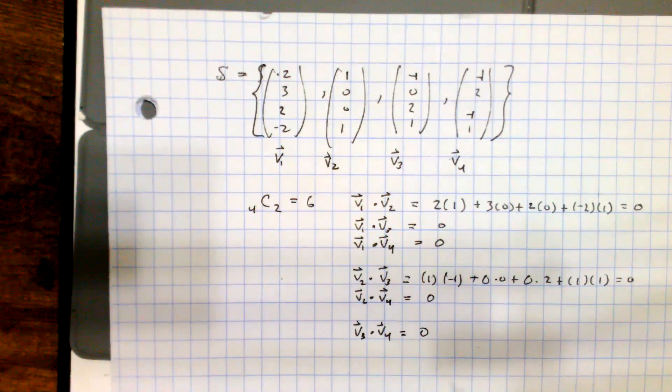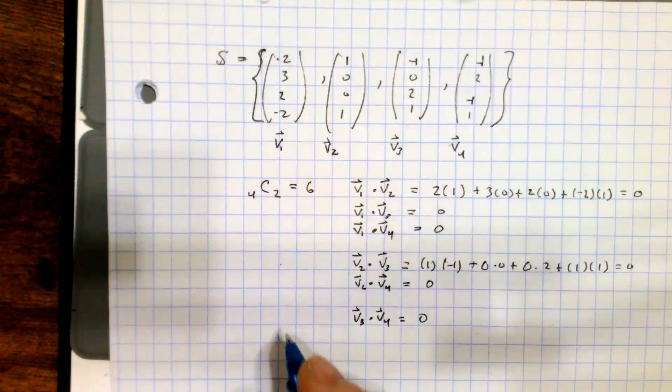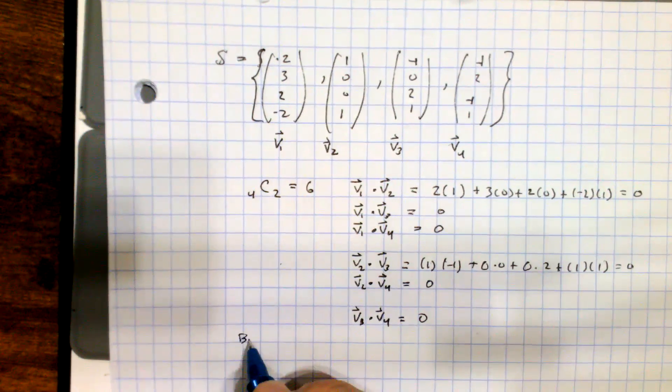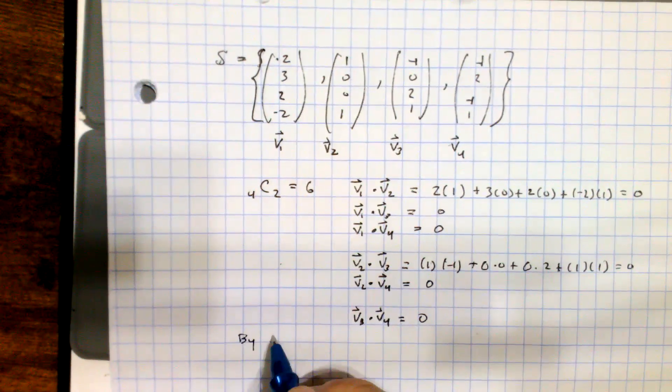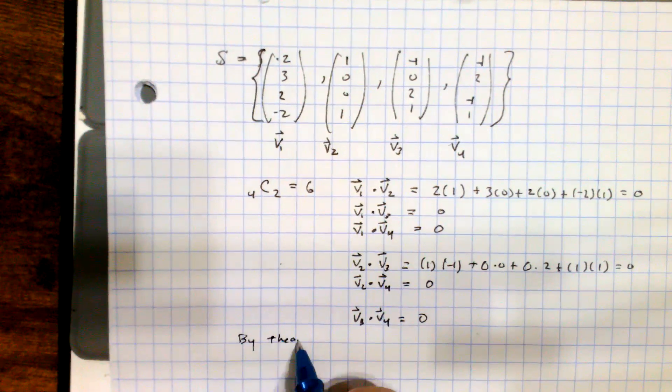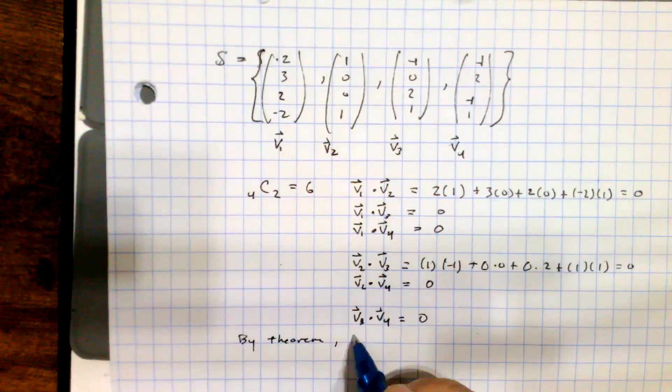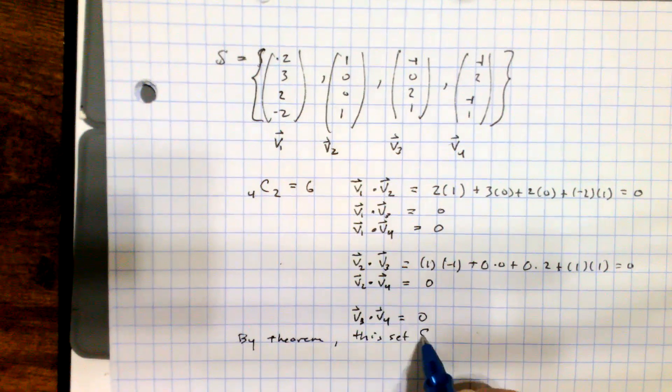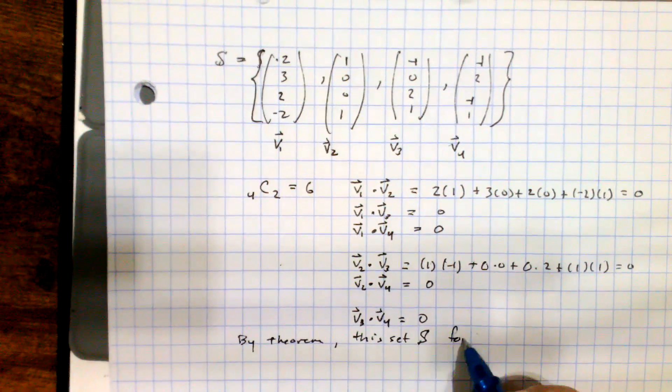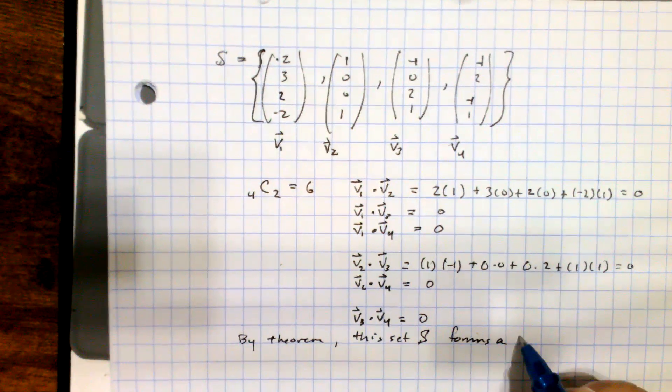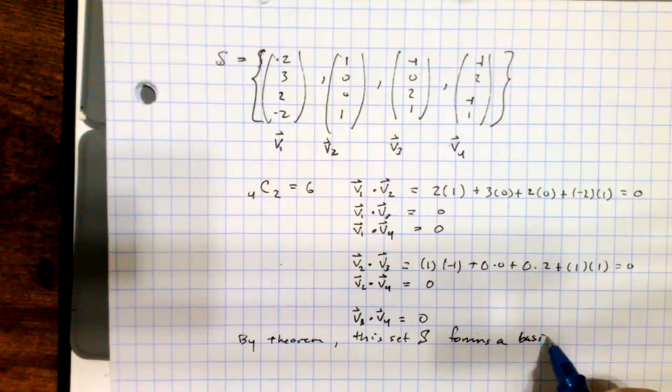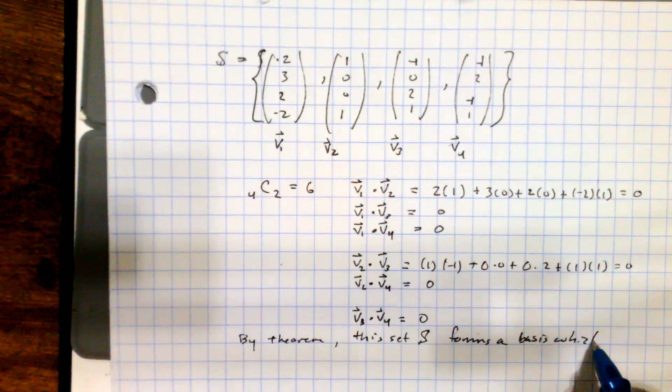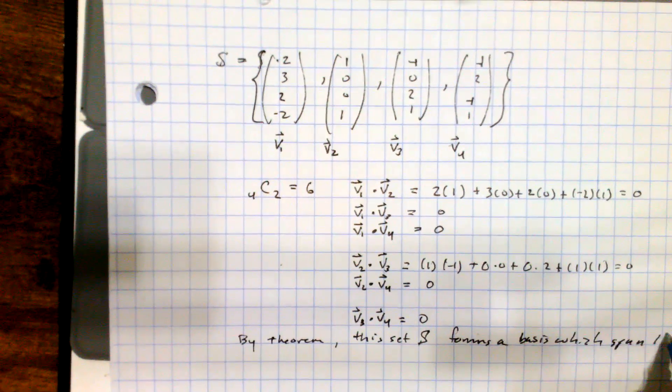So as I follow for each of the remaining dot products, those terms are all zero, and so by the last theorem, well, by our first theorem, so far anyway, by our theorem, this set S forms a basis, which happens to span R4.